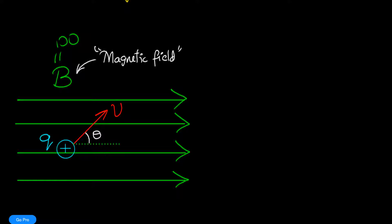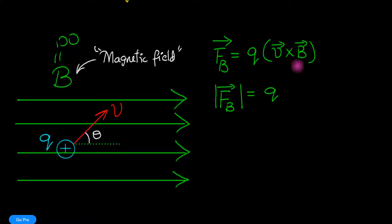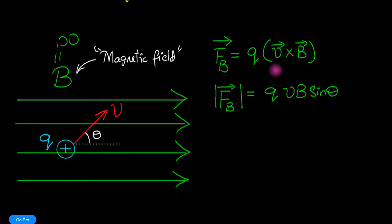Let's write down his findings. The magnetic force F_B — B for magnetism — turns out to be equal to q times v cross B as a vector equation. In terms of magnitude, that is q times v times B times sine theta, where theta is the angle between the velocity vector v and the magnetic field vector B.